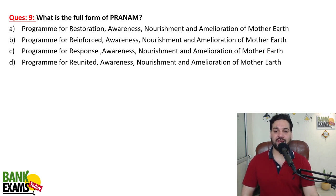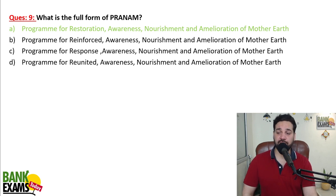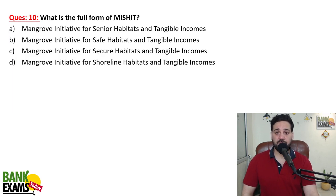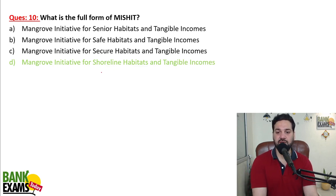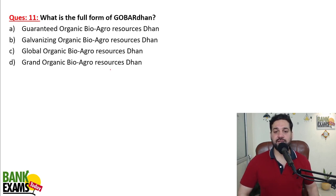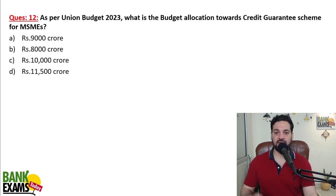PRANAM stands for Program for Restoration, Awareness, Nourishment and Amelioration of Mother Earth. MISHTI stands for Mangrove Initiative for Shoreline Habitats and Tangible Incomes. GOBARDHAN stands for Galvanizing Organic Bio-Agro Resources Dhan. Please remember all these full forms — they are very important.